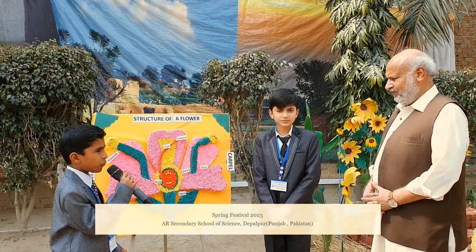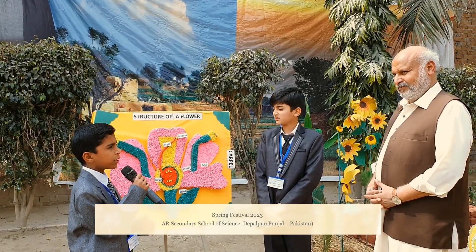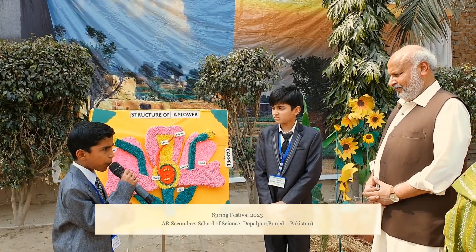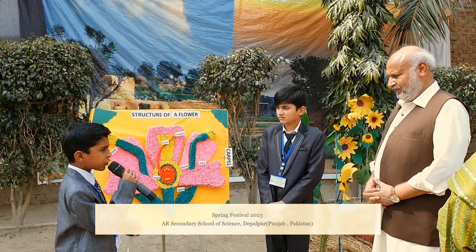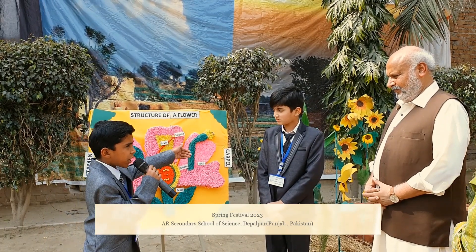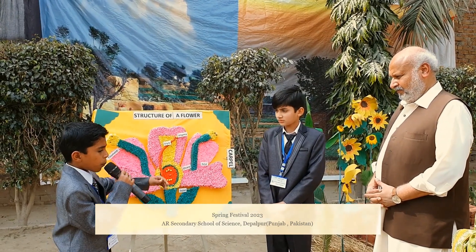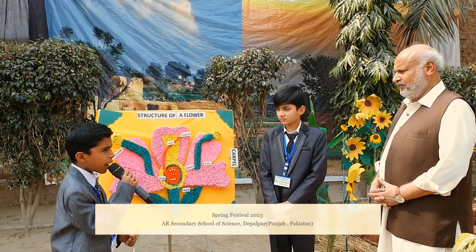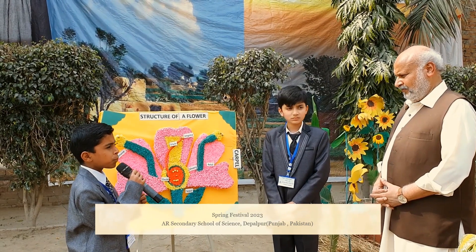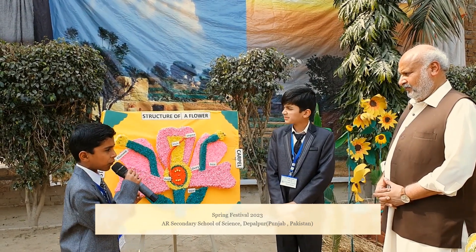The central structure of the female reproductive part of the flower is known as the carpel. The parts of the carpel are the stigma, style, and ovary. The top of the carpel is known as the stigma. It catches pollen grains due to its sticky surface.